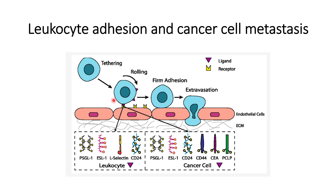Sometimes this process can be used by cancer cells for metastasis. In cancer cells, there is no L-selectin; however, P-selectin and E-selectin are present. The function of L-selectin is performed by other ligands present in the cancerous cells, as shown in some research studies, where other ligands formed in cancer cells can replace the role of L-selectin.